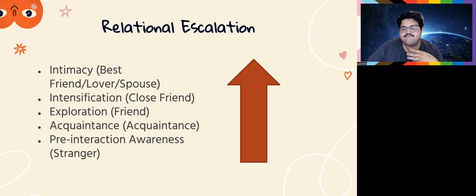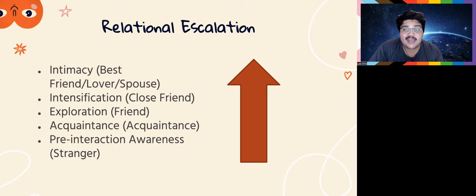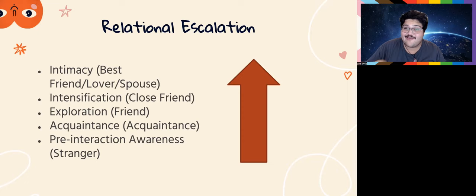Finally, there's intimacy — when you have a spouse or someone who knows the totality of you. In terms of social penetration, that wedge is almost completely filled. This stage involves very close intimacy and high immediacy — things like getting married, moving in together, or buying a house together.